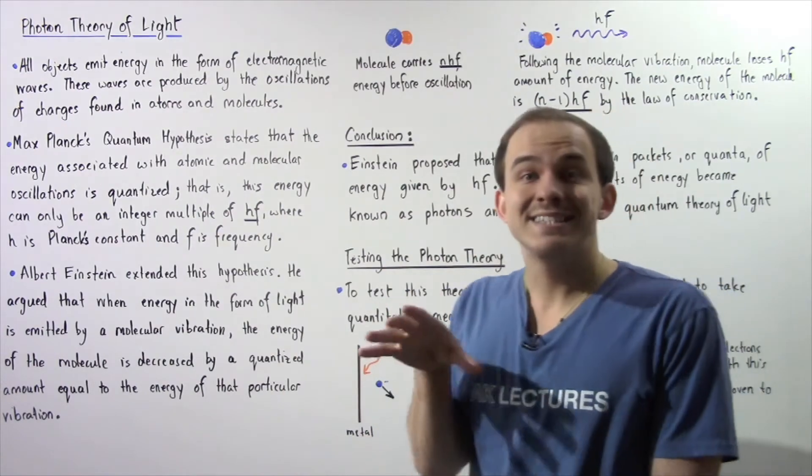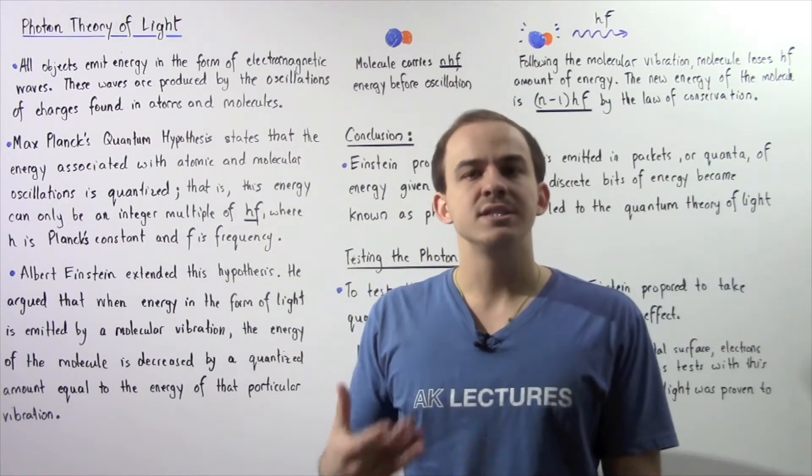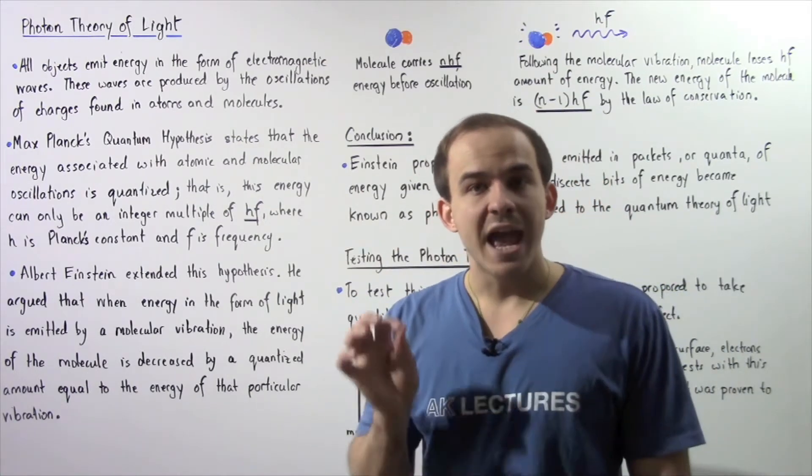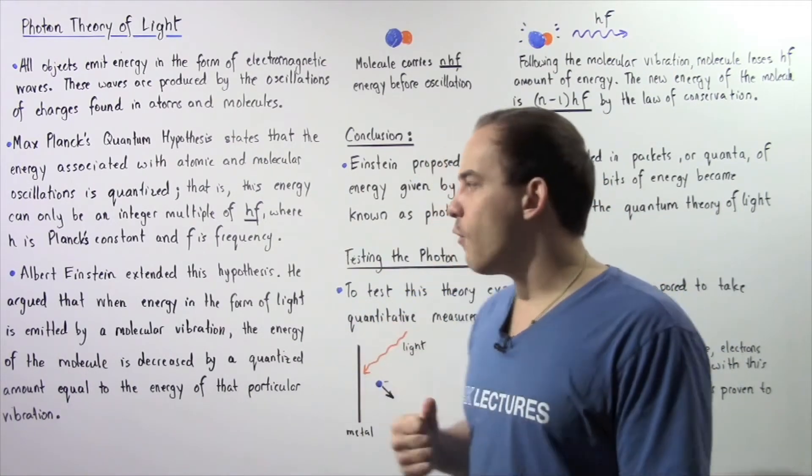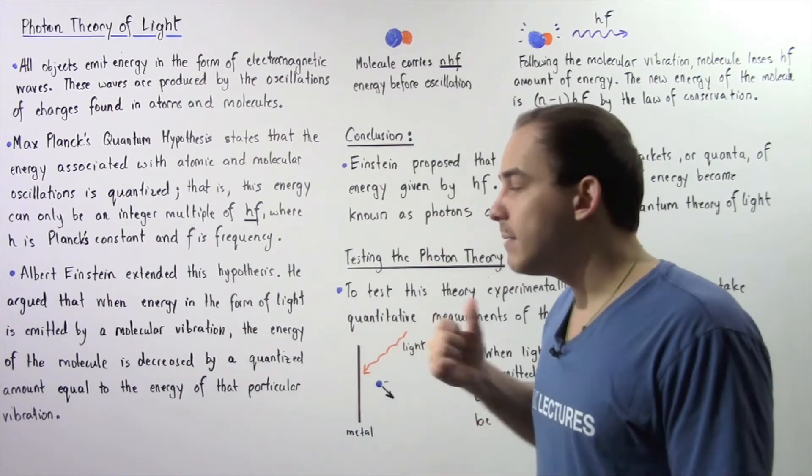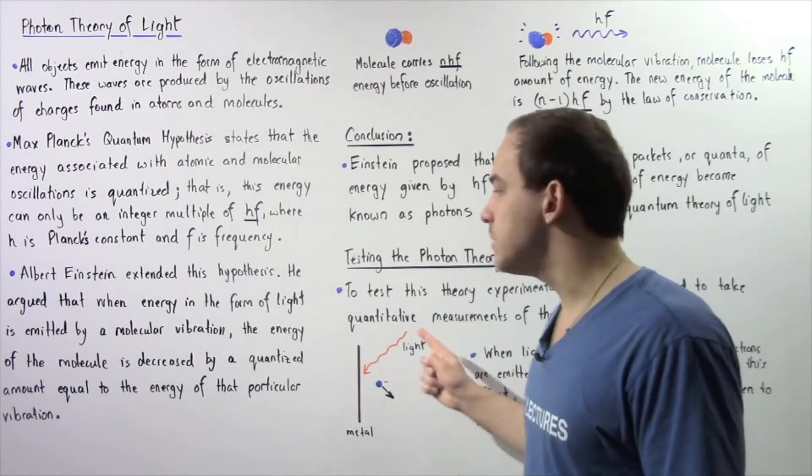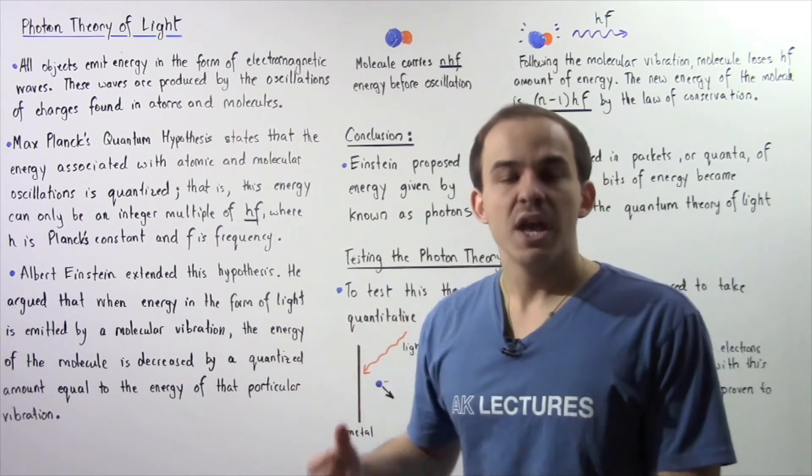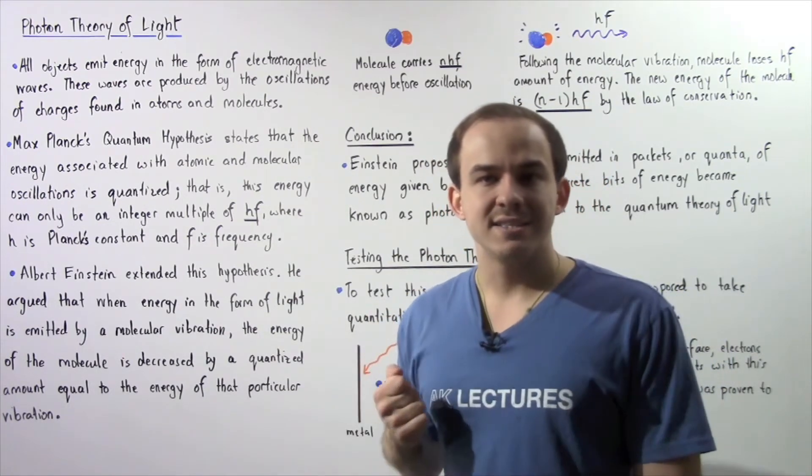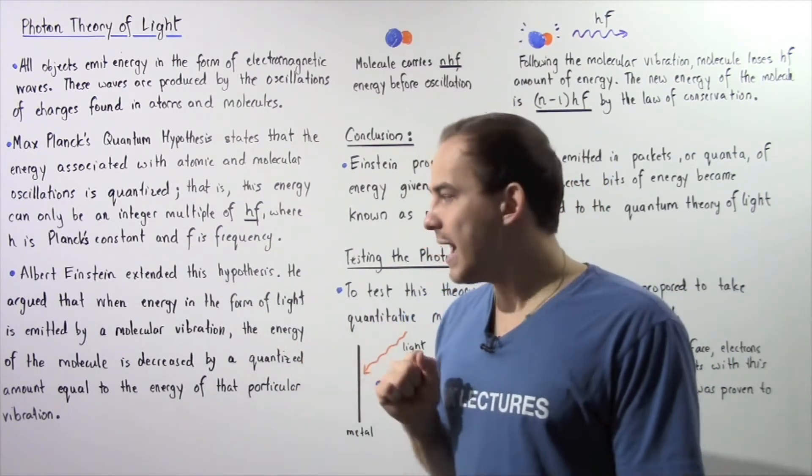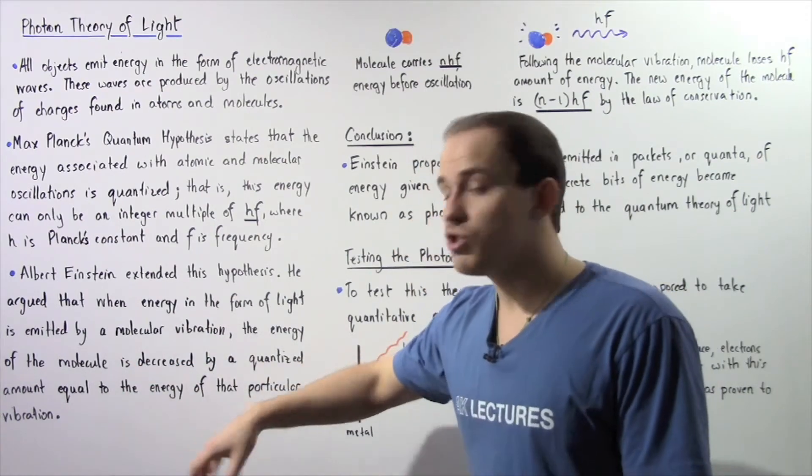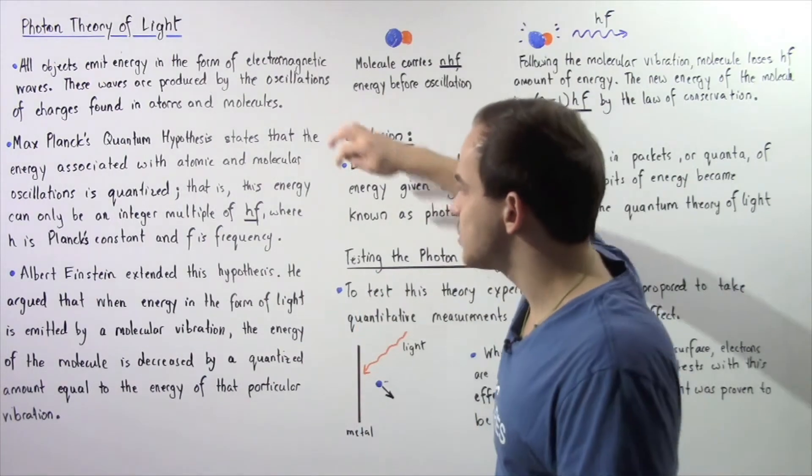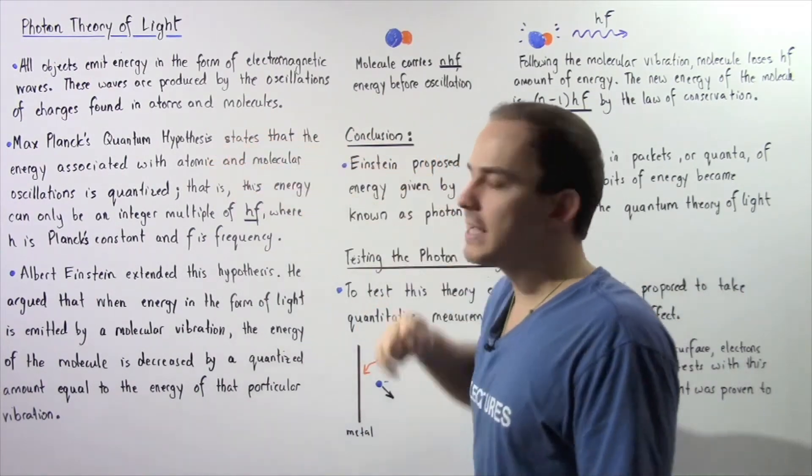Einstein extended this hypothesis even further. He argued that whenever energy is emitted in the form of light by a molecular vibration, the energy of that molecule is decreased by a quantized amount, by a discrete amount, that is equal to the energy of that particular vibration, equaling h times f.